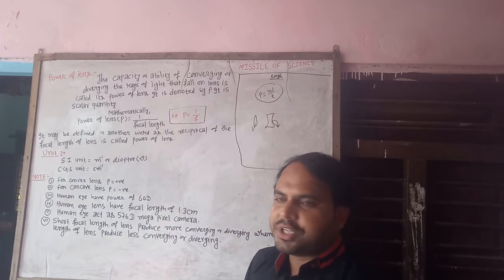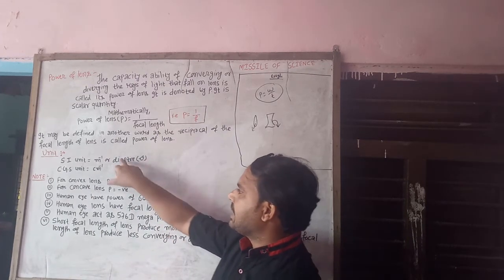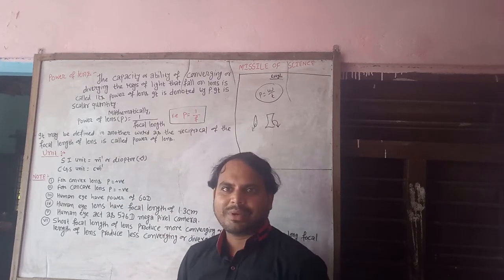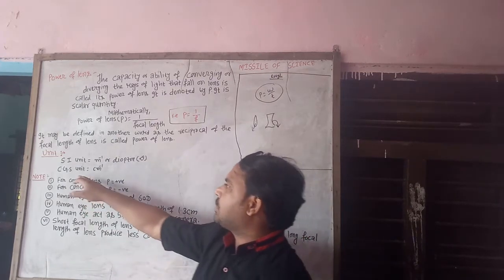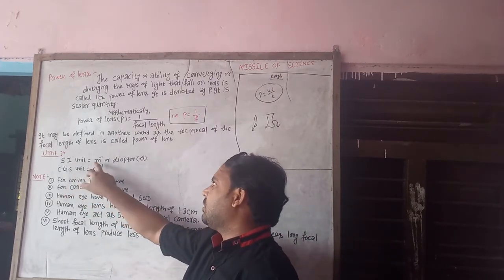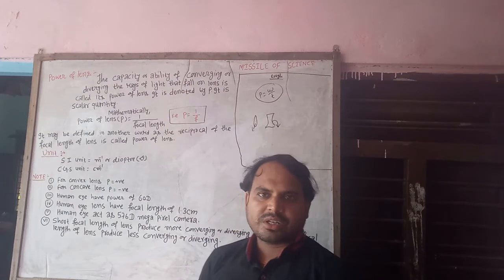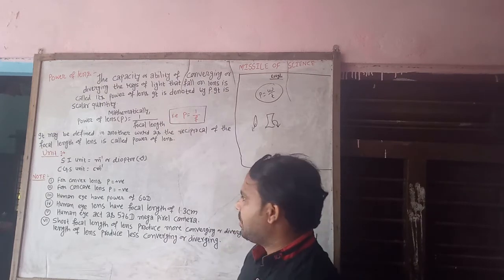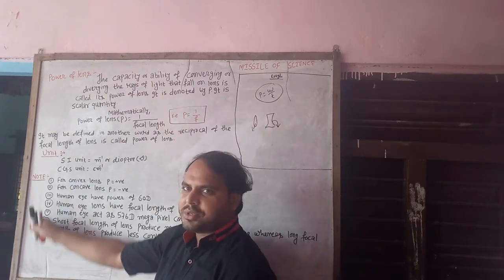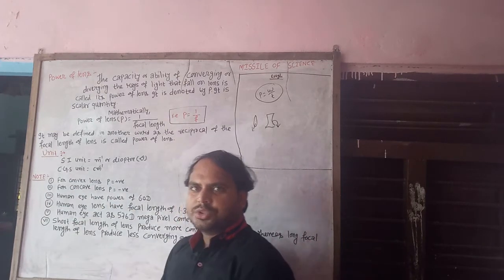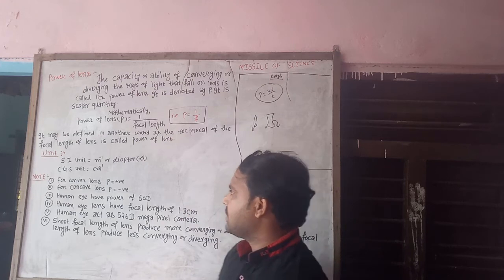The symbol for the unit of power is capital D, which stands for Diopter. The unit is inverse centimeter or inverse meter. These are useful informations for the power of lens.